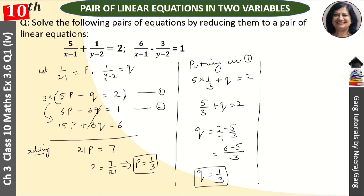What did we take for p? We took 1 upon x minus 1. So p is equal to 1 upon 3. It means 1 upon x minus 1 is equal to 1 upon 3. Cross multiply, and after cross multiplying this becomes x minus 1 is equal to 3, and x is equal to 4.